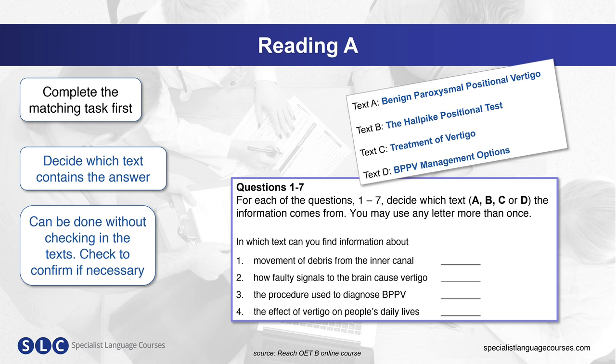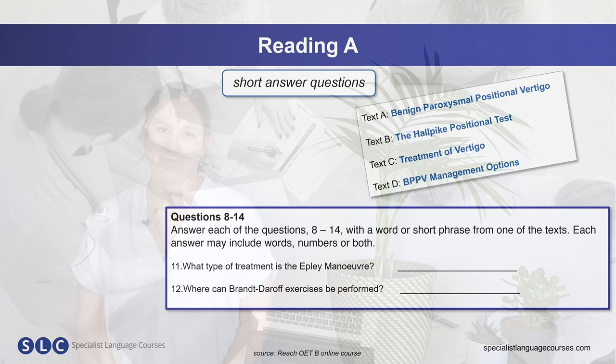Let's take a look at number one: in which text can you find information about movement debris from the inner canal? Well, based on what we have seen already, we know that this would be in Text A. Similarly, number two — how faulty signs to the brain cause vertigo — this would also come from the description in Text A. Number three, this information would clearly be found in Text B.